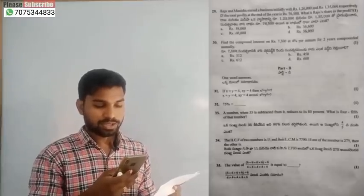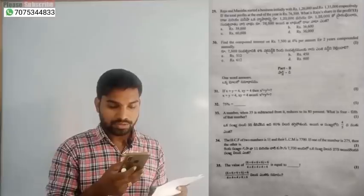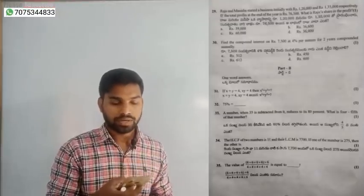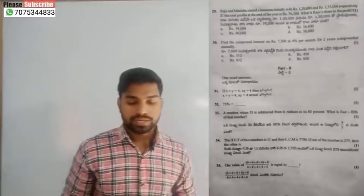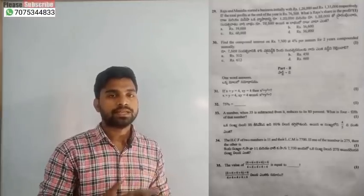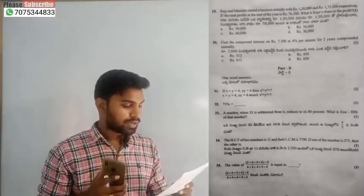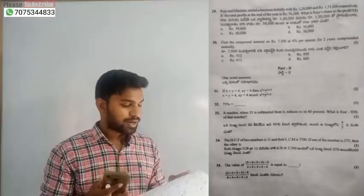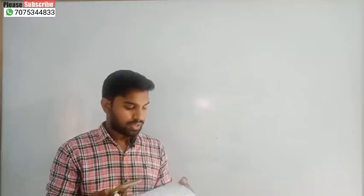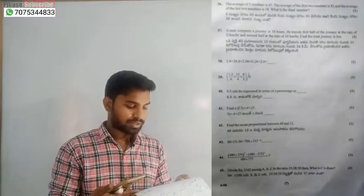Question number 29: partnership — the answer is 36,000, option D. Question number 30: compound interest — compounded annually — the compound interest is 612, option C. Questions 31 through 36: answer 8, answer 3/4, answer 140, answer 308, answer 4/39, and the third number is 87.